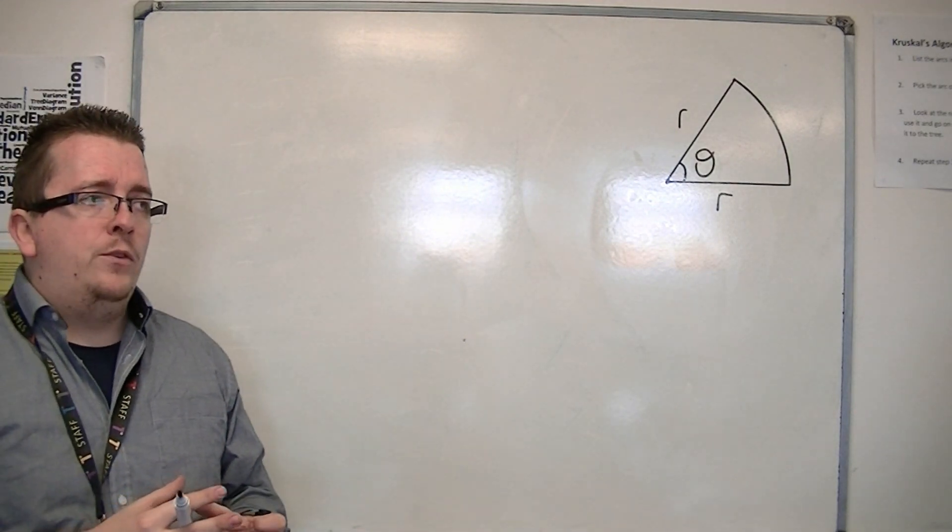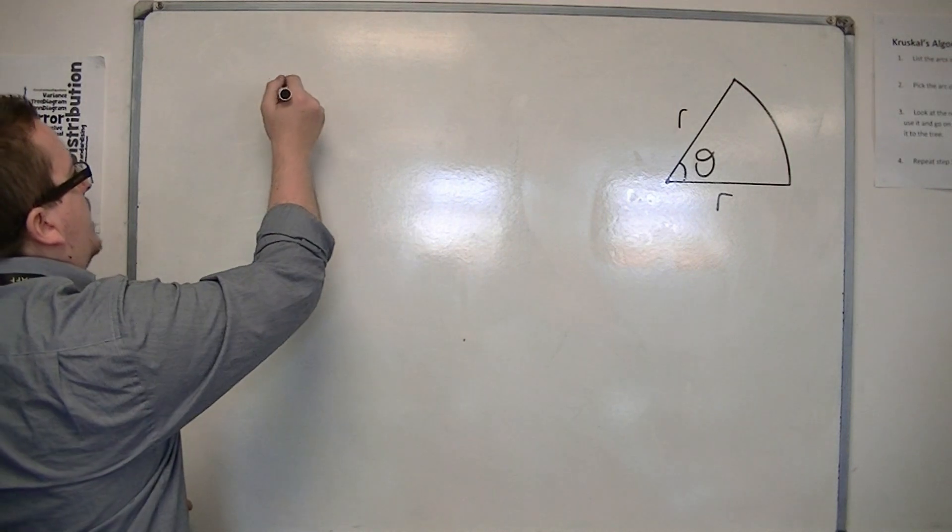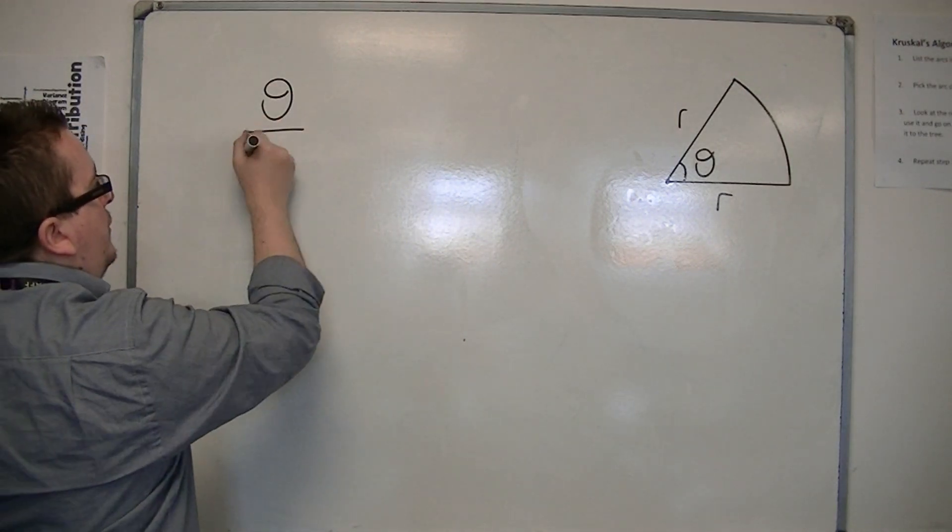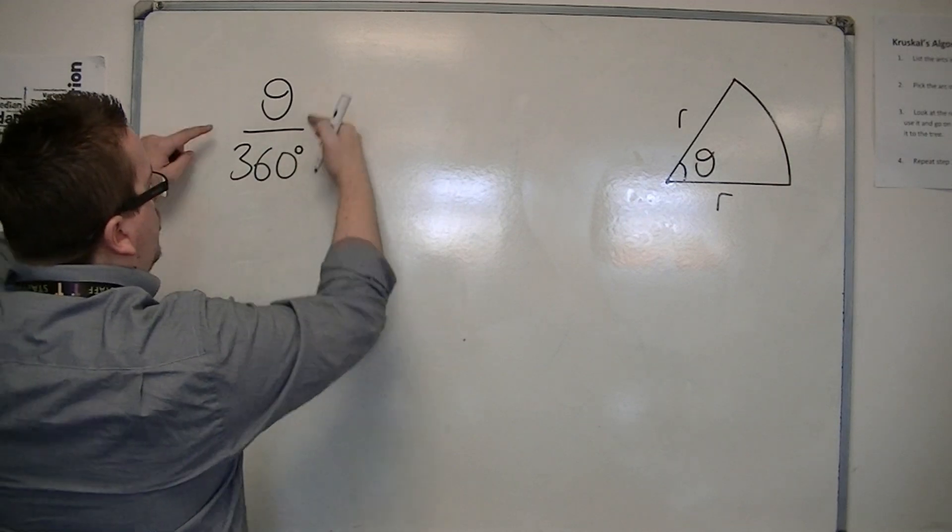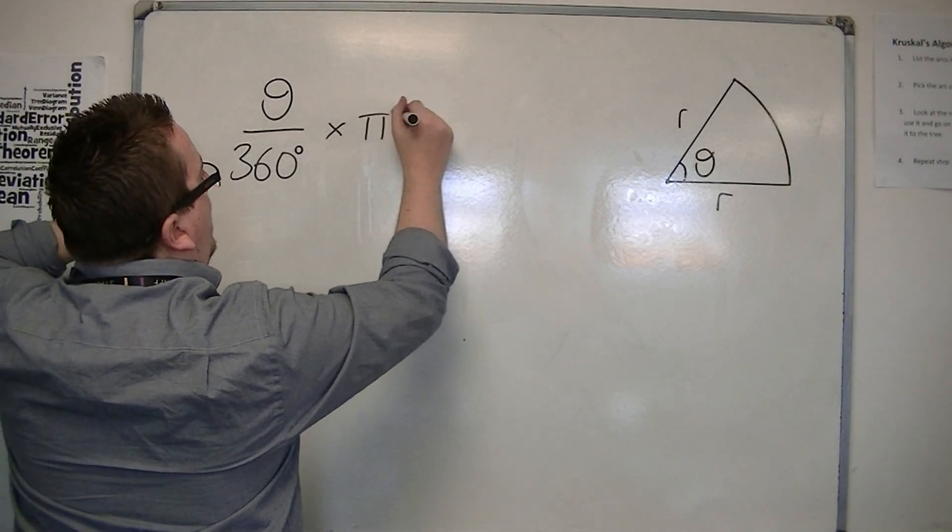if we wanted to work out, let's say, the area, then we would be looking at the angle over 360 degrees, because we want a portion of the area of the circle, which we know is pi r squared.